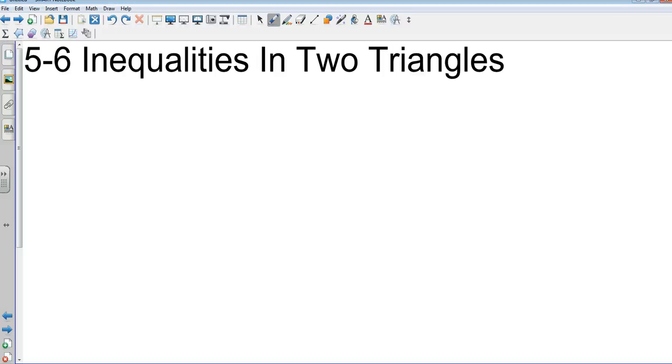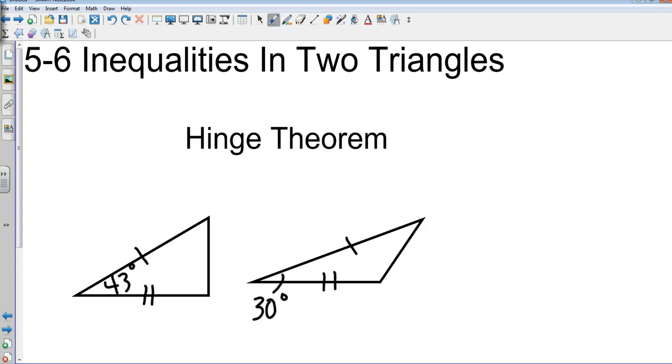Okay, geometry chapter 5 section 6: inequalities in two triangles. In the last section we talked about the triangle inequality and before that we had the inequality in one triangle. Now we're going to put the two together and compare two different types of triangles. We're going to start off with what's called the hinge theorem.